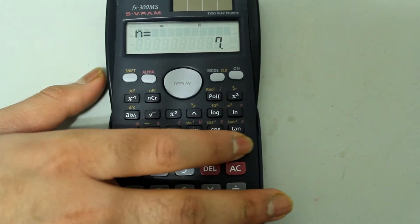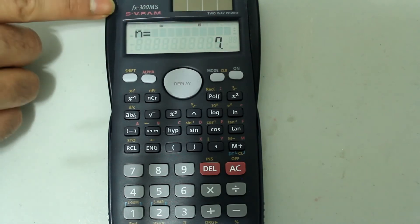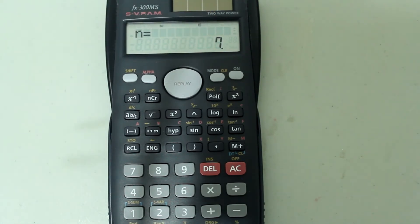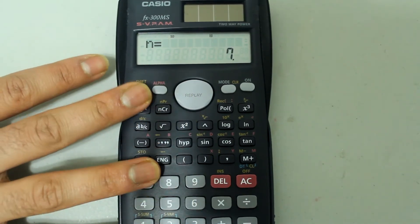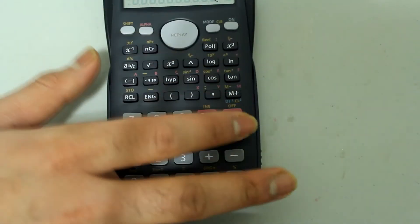Now if I press M plus, notice that N went to 7 from 4, so there are seven pieces of data right now. The calculator took 9 as being entered three times. So now that we have our data entered, let's clear this.